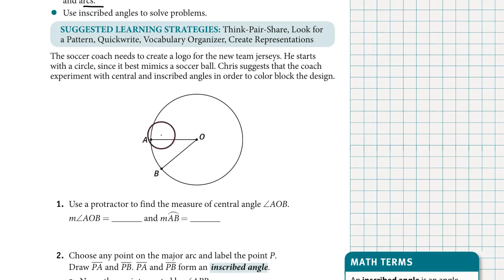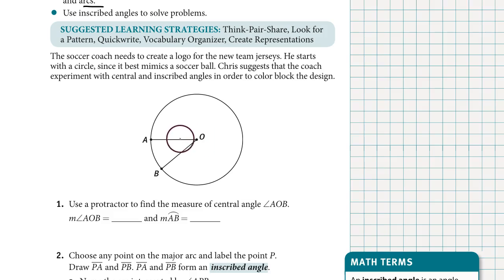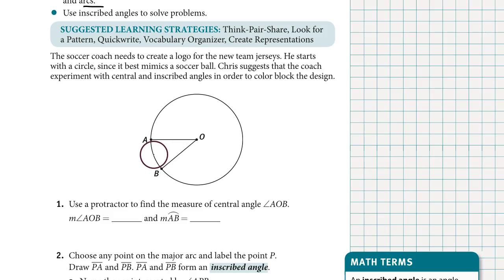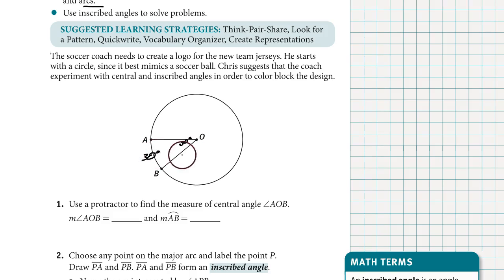In the last lesson, we looked at central angles. Central angles have their vertex at the center of the circle, and the sides of the angle intercept the circle, creating an arc. Our theorem was that the measure of the central angle is equal to the measure of the intercepted arc. For example, if this was 30 degrees, then the minor arc is 30 degrees.